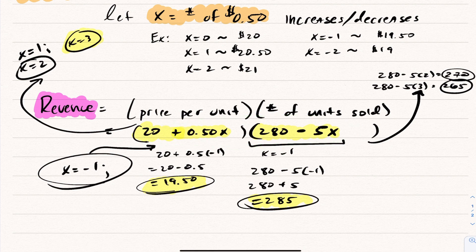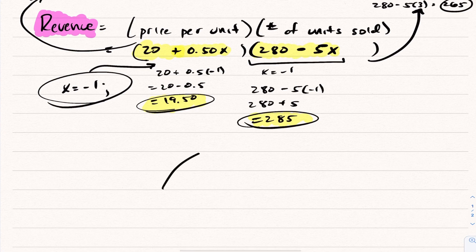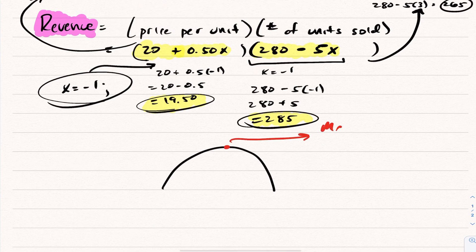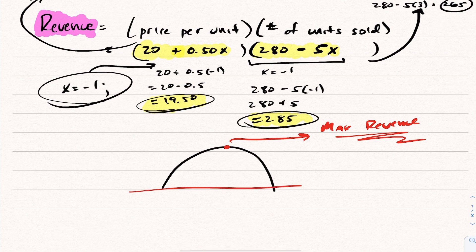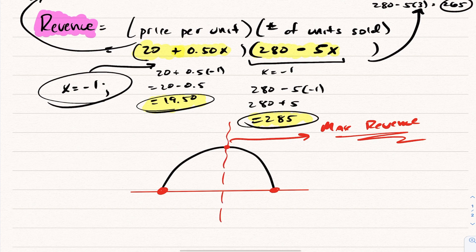This revenue relation is actually a quadratic. If you expand it using FOIL, the leading coefficient would be negative. Because the leading coefficient is negative, this quadratic opens downwards — which means it hits a maximum. That maximum is our maximum revenue. To find it, I can find the roots, average them out to get the midpoint, and that gives me the vertex — i.e., the value of X that maximizes revenue.